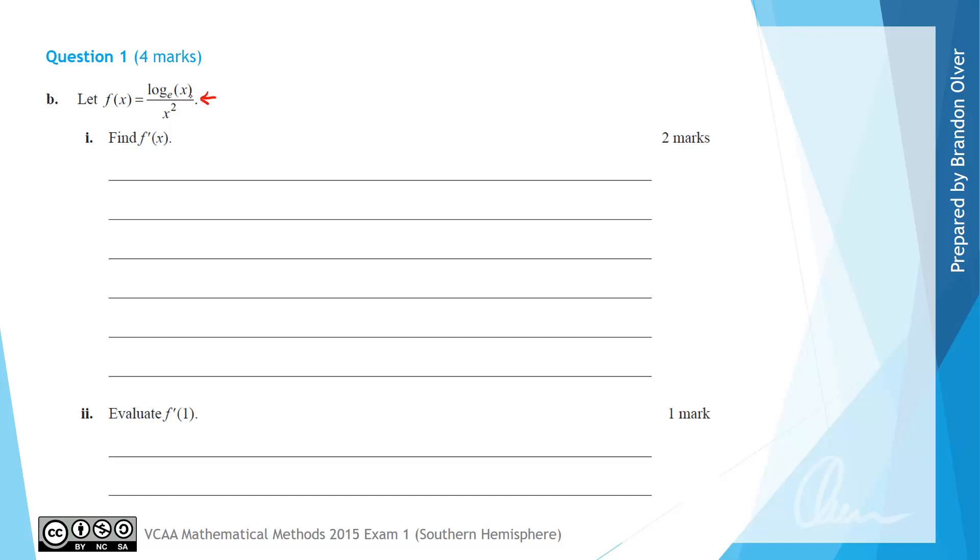We can see that this is a function divided by another function so we need the quotient rule. For the quotient rule, u is going to equal the function in the numerator so it is going to be log_e(x). And the denominator is going to be the function v which in this case is x squared.